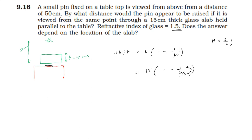So, 15 into (1 minus 1 by 3/2), which equals 15 into (1 minus 2/3), equals 15 into 1/3. Therefore, shift is 5 cm.